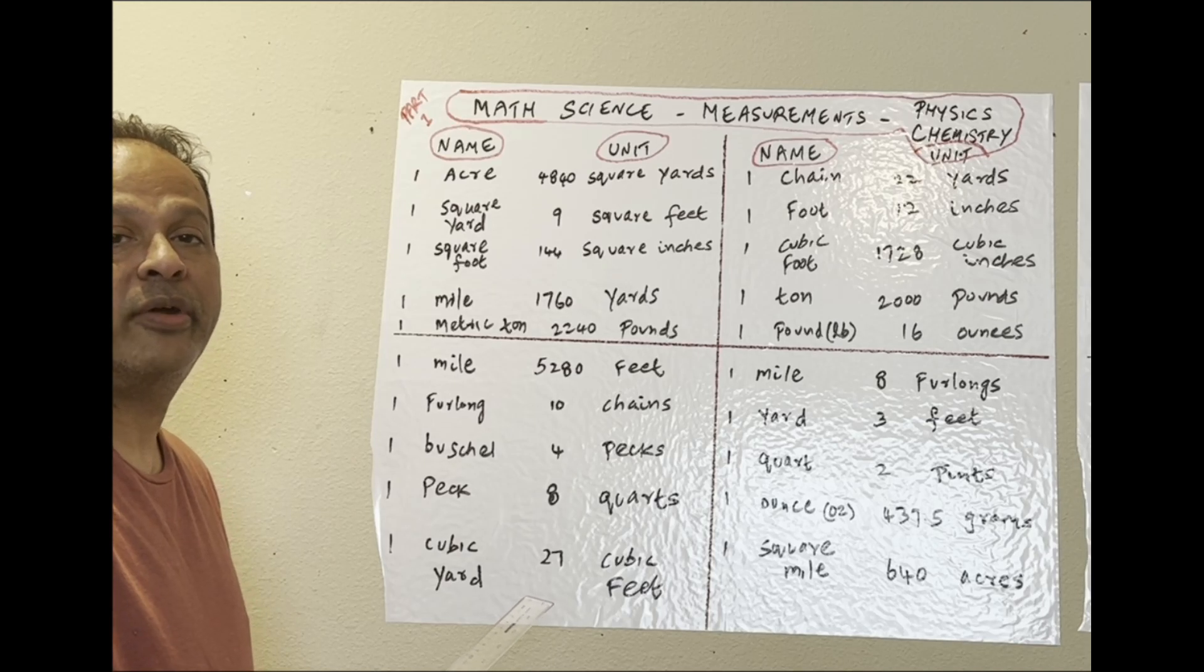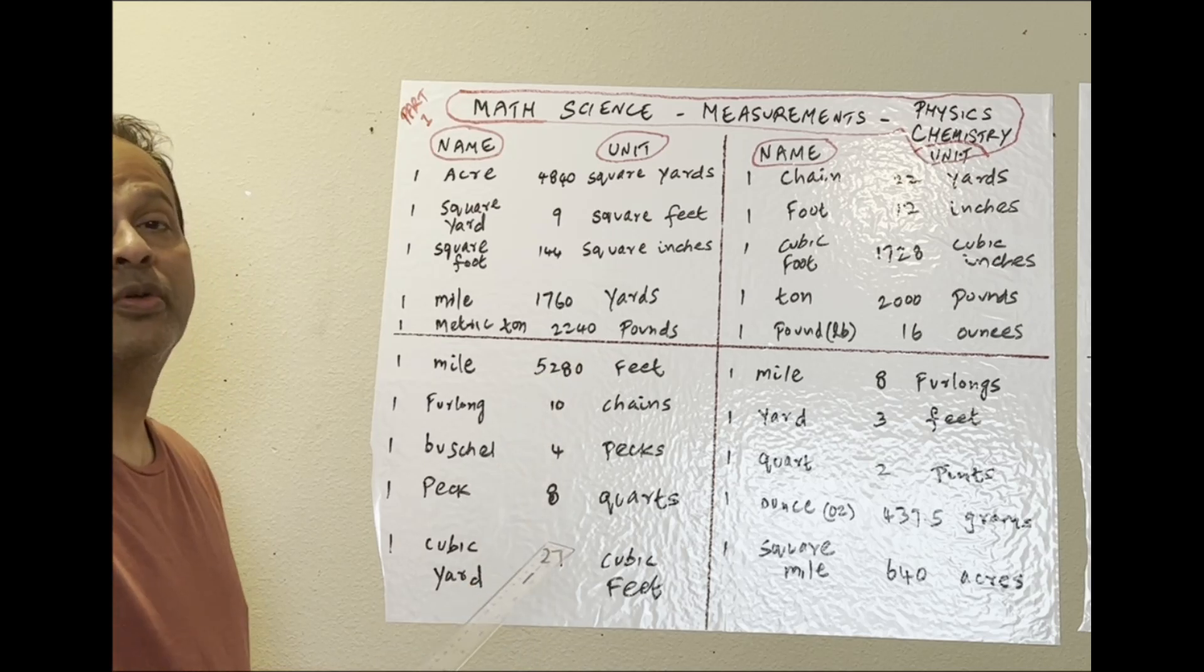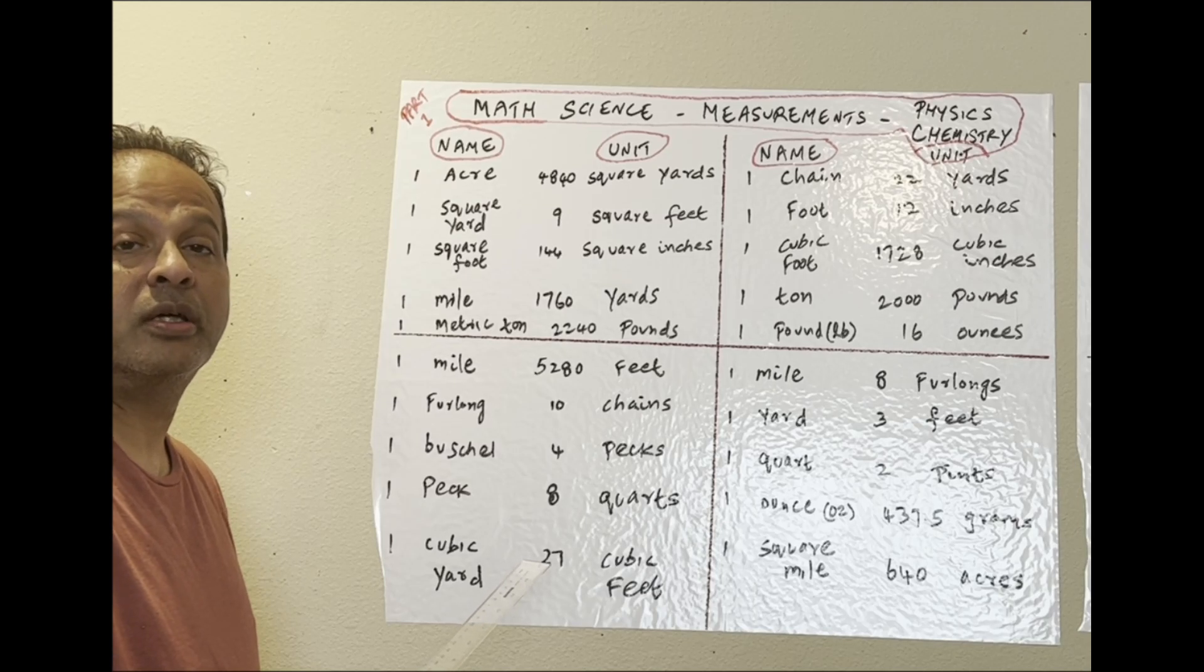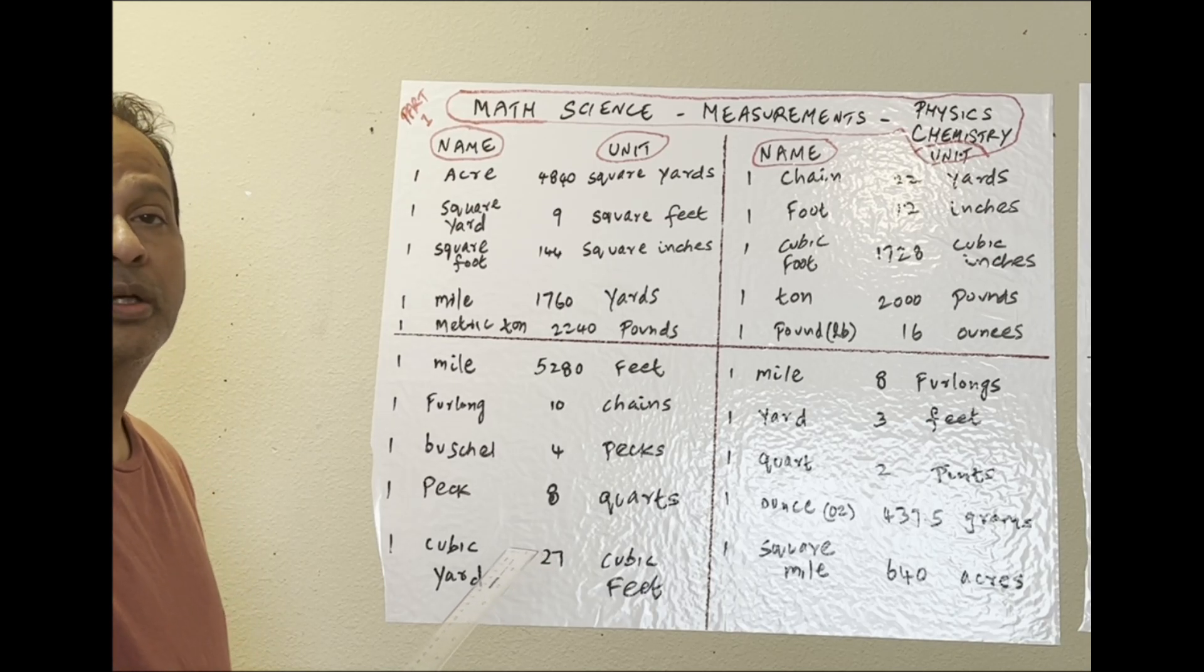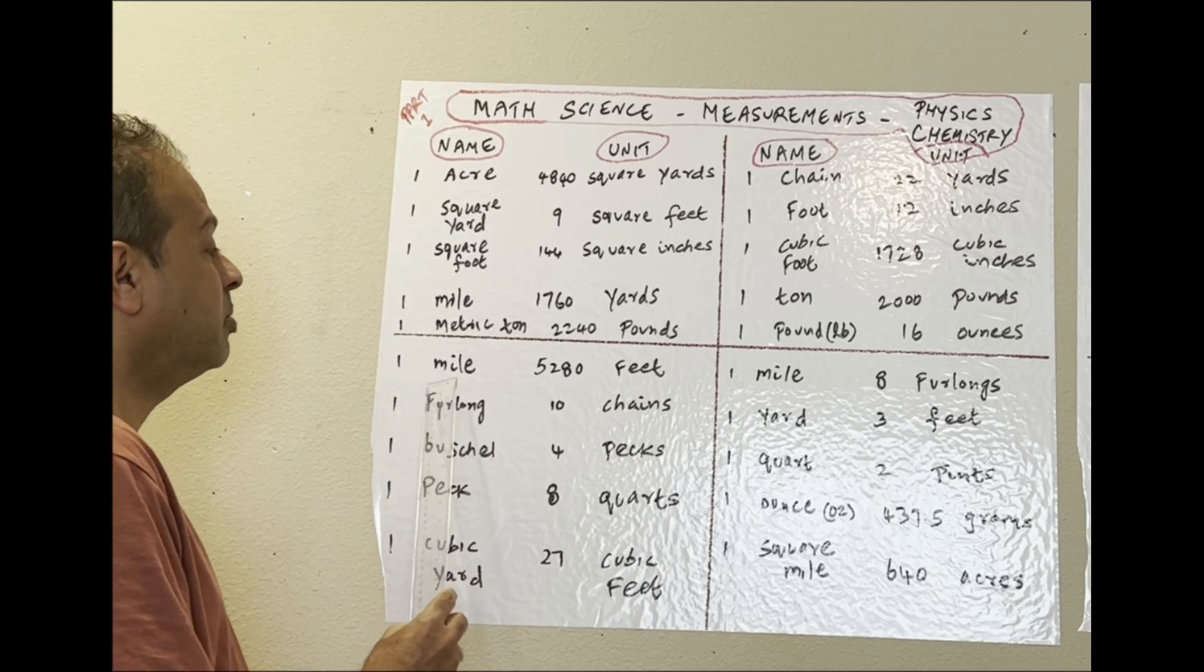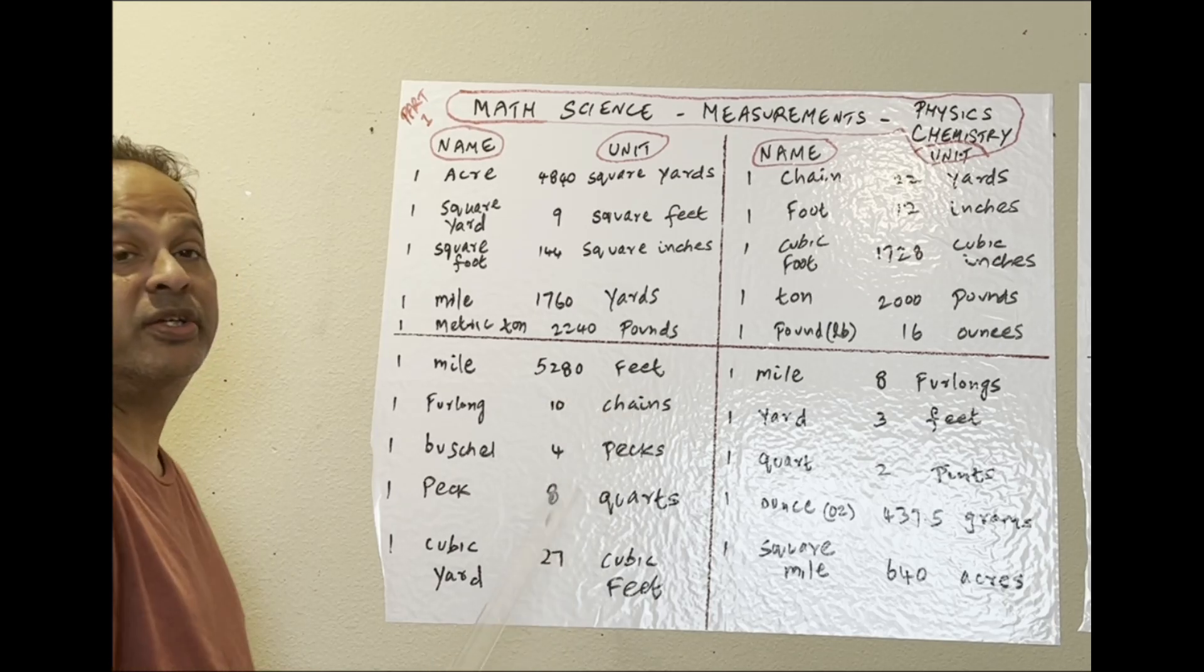One metric ton: 2,240 pounds. That's for the large containers that go on cargo ships. A lot of containers go in that. One mile, another format, is 5,280 feet.